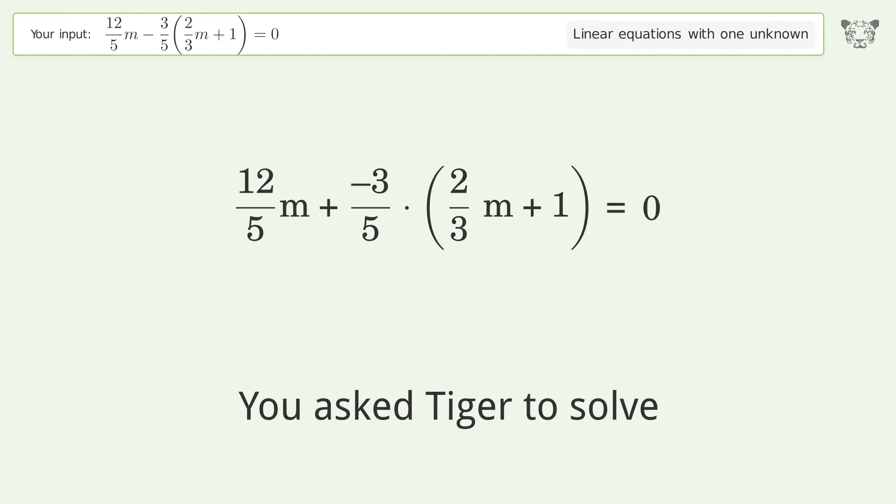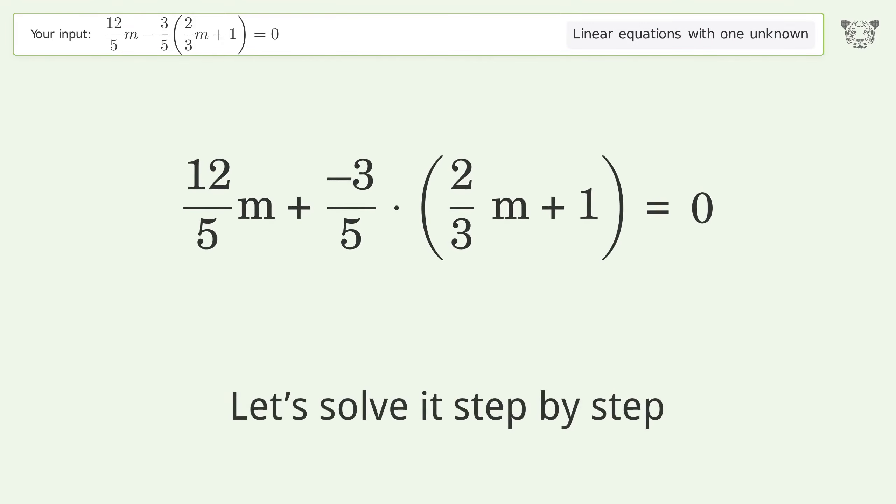You asked Tiger to solve this linear equation with one unknown. The final result is m equals 3 over 10. Let's solve it step by step.